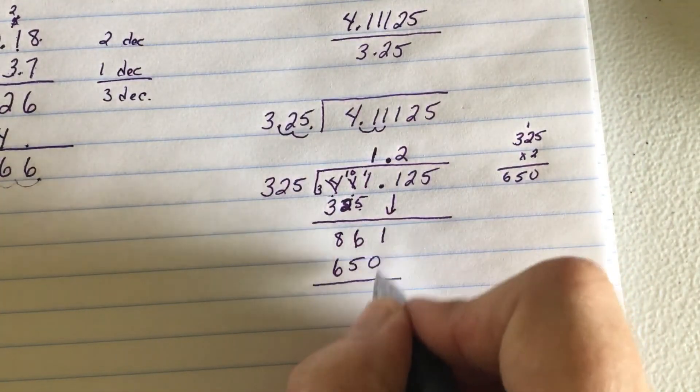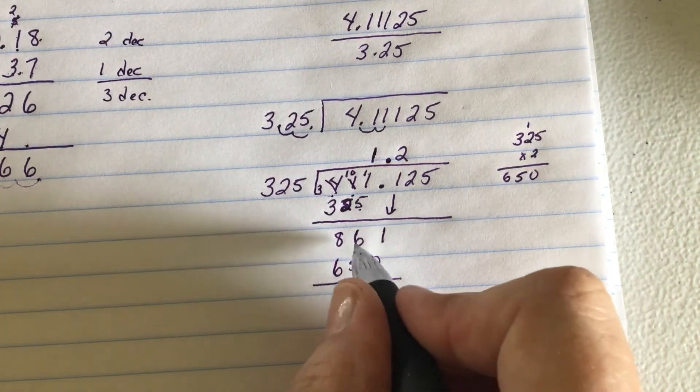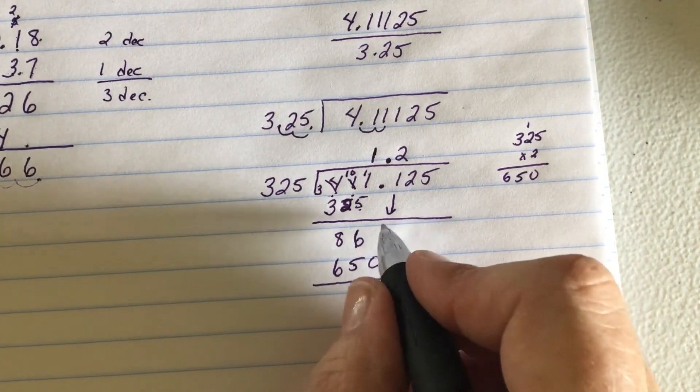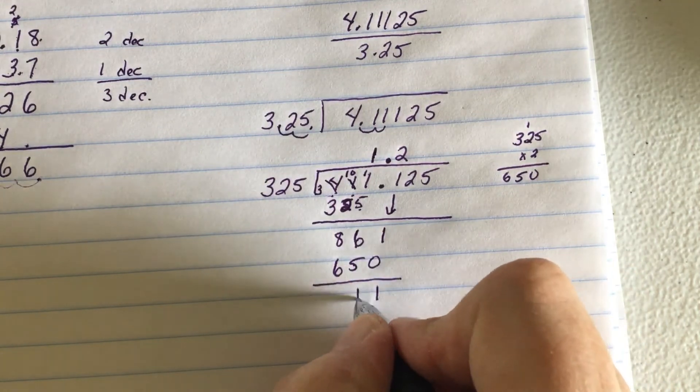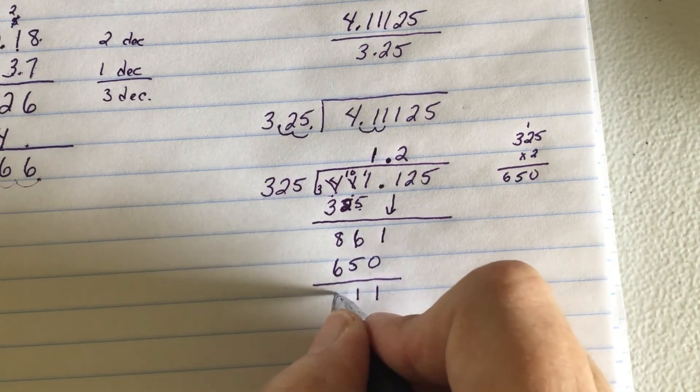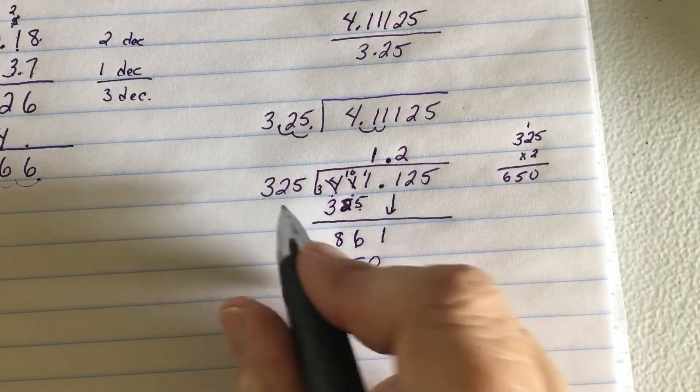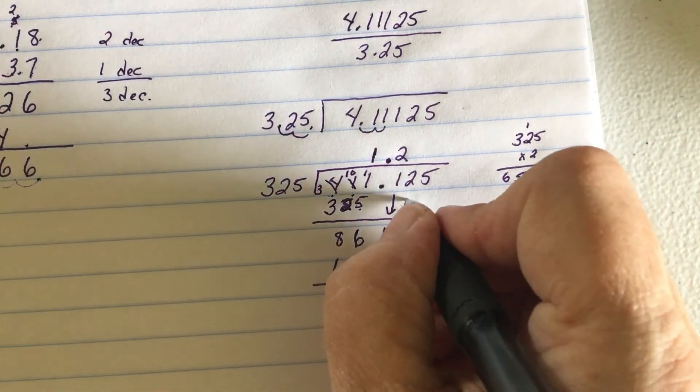So now I subtract. 0 minus 1 is 1. 6 minus 5, or 1 minus 0, sorry, I said it backwards. 6 minus 5 is 1. 8 minus 6 is 2. 211 smaller? Sure is. So I'm going to drop.